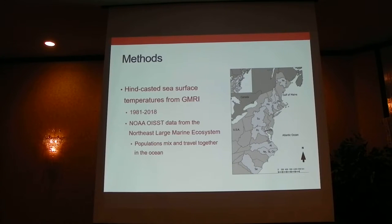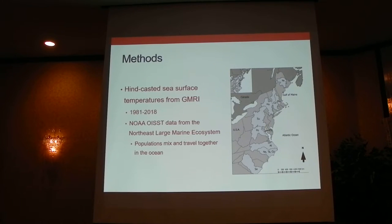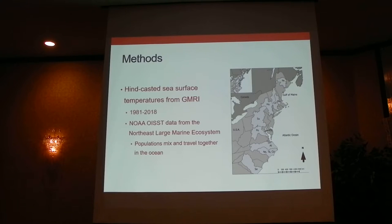All climate data was gathered and prepared for us by the Gulf of Maine Research Institute. The hindcasted temperatures we used were from 1981 to 2018, compiled from NOAA's Optimum Interpolation Sea Surface Temperature dataset. The region covered was the Northeast Large Marine Ecosystem, from the Bay of Fundy to Cape Lookout, North Carolina — chosen because studies suggest shad are mixing and traveling together in the ocean, moving from the Gulf of Maine in fall to southern Long Island and Nantucket Shoals in winter, and as far as North Carolina in late winter and spring.